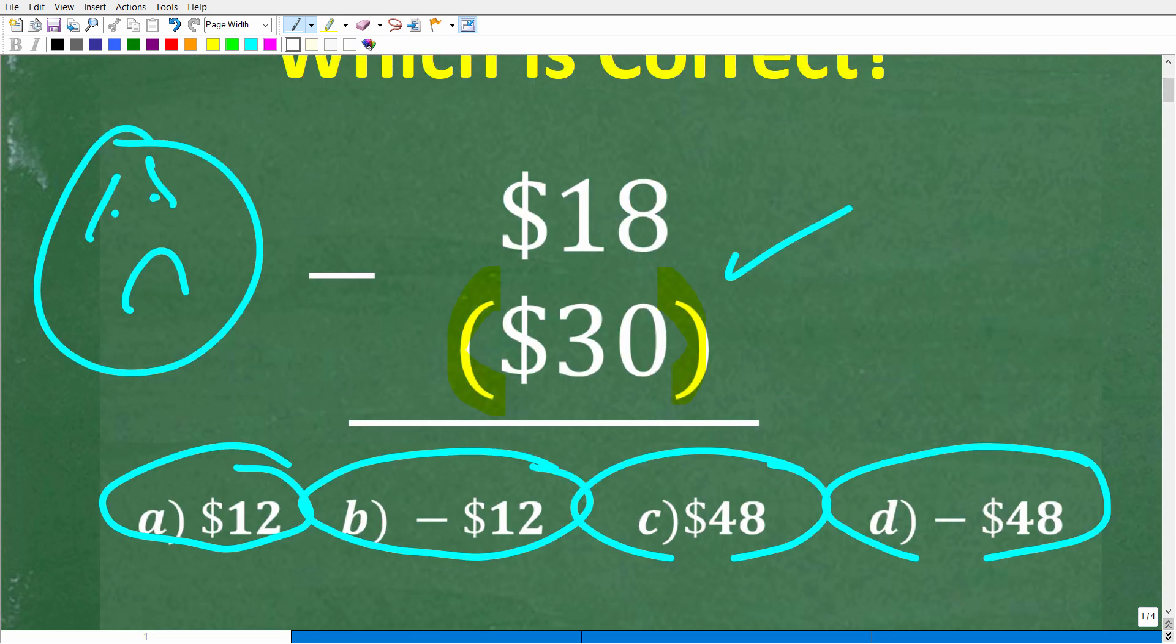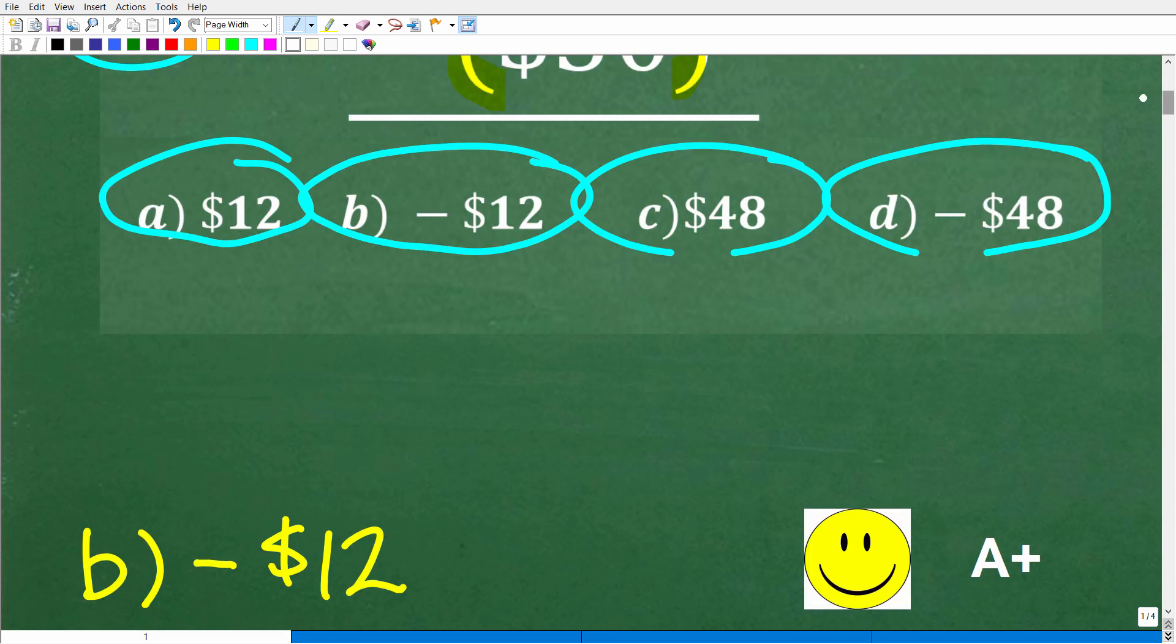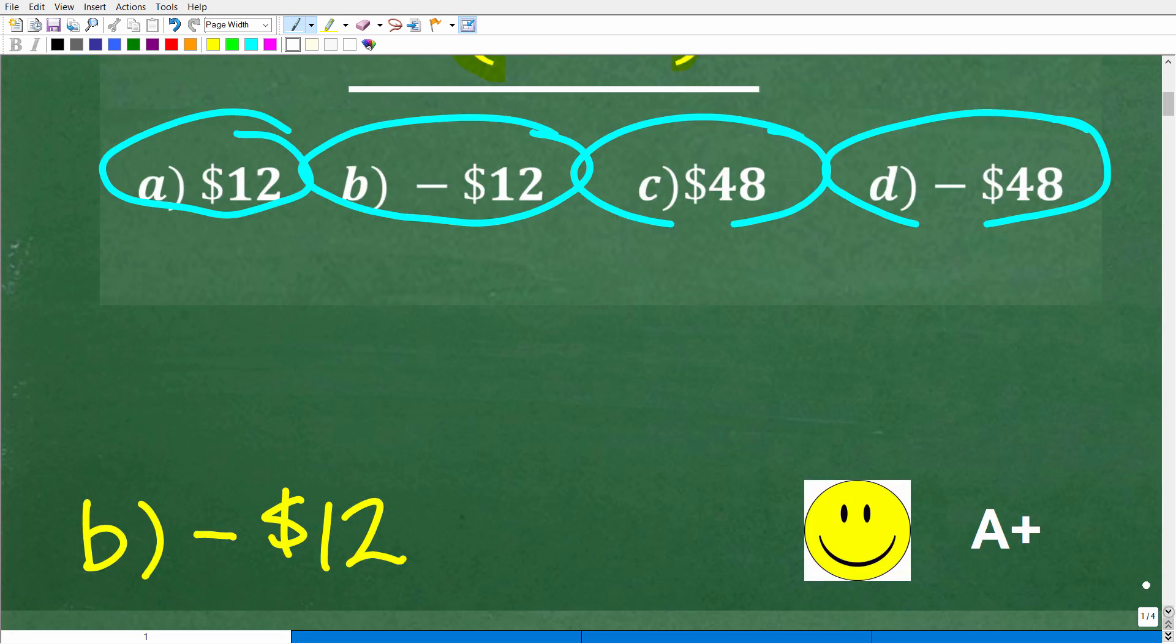All right, so here we go. We got $18 minus $30 in parentheses. What is the answer? Well, let me go ahead and show it to you right now. Now, so this is the answer that I had in my previous videos.